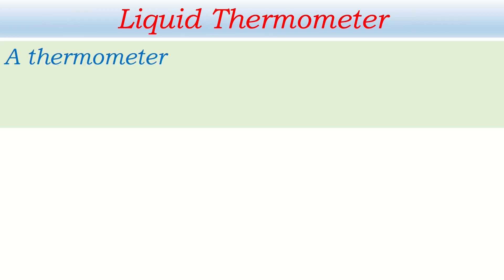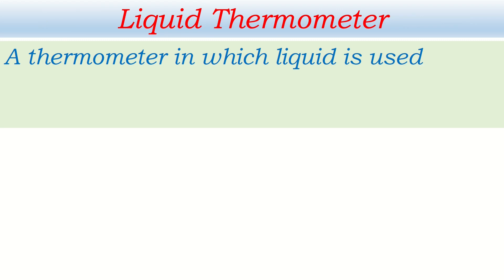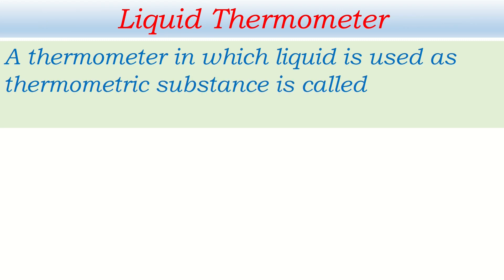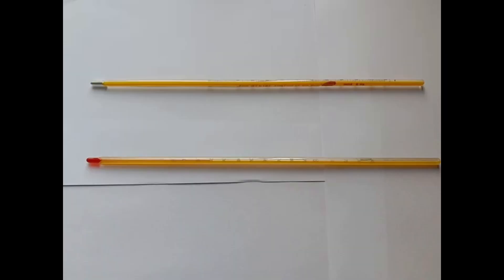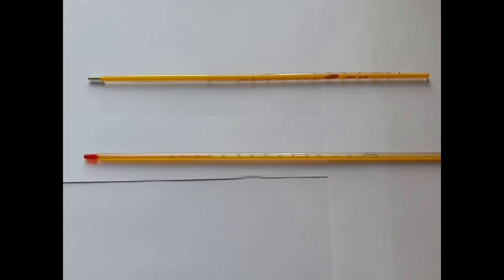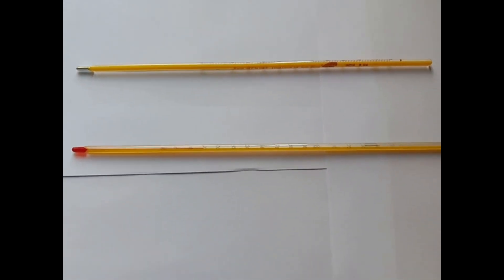Exactly what is it? A liquid thermometer is a thermometer in which liquid is used as the thermometric substance. This thermometric liquid may be mercury or it may be alcohol. Here I am showing two thermometers.